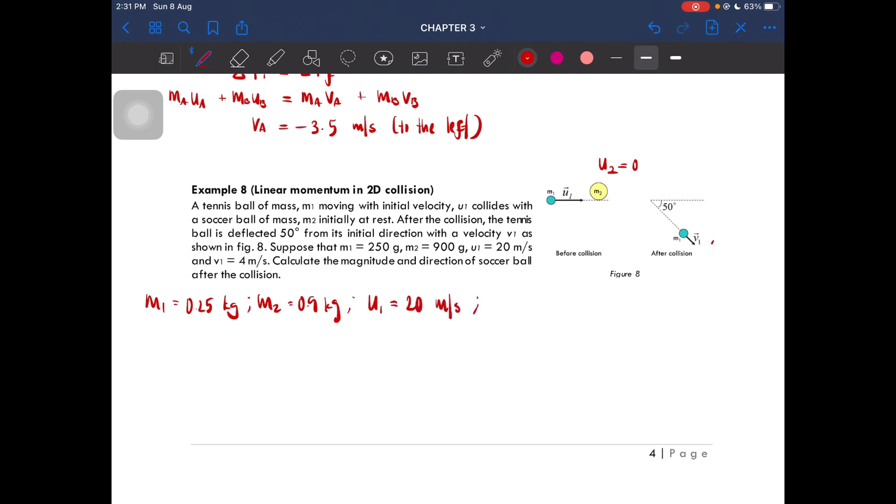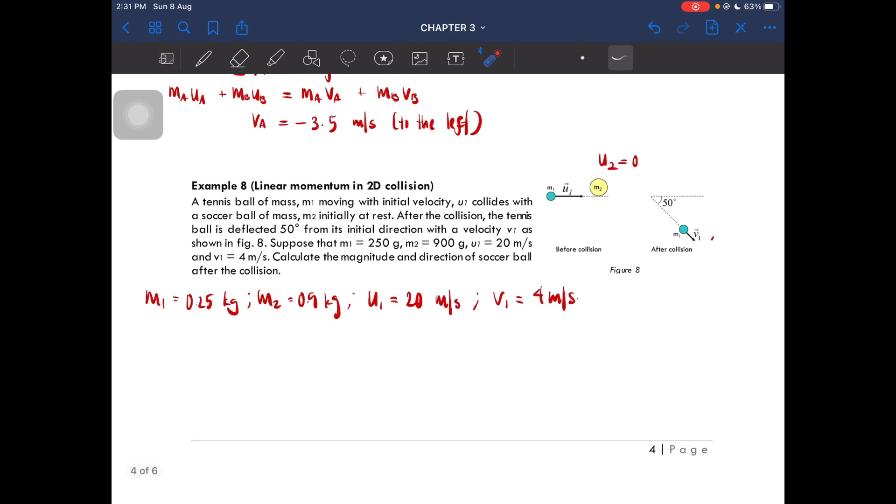We also have the final velocity of ball one, which is 4 meters per second. Calculate the magnitude and direction of the soccer ball after the collision. So we are looking at m2. We have to find the magnitude and direction of this soccer ball after the collision.